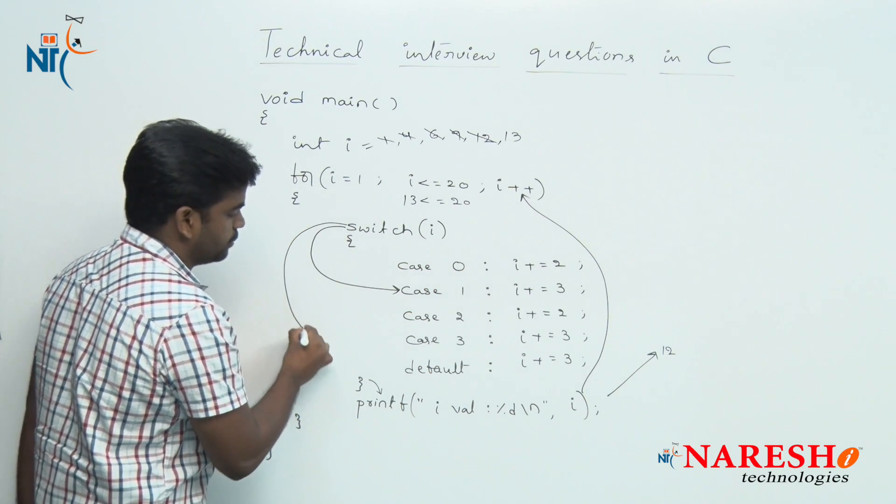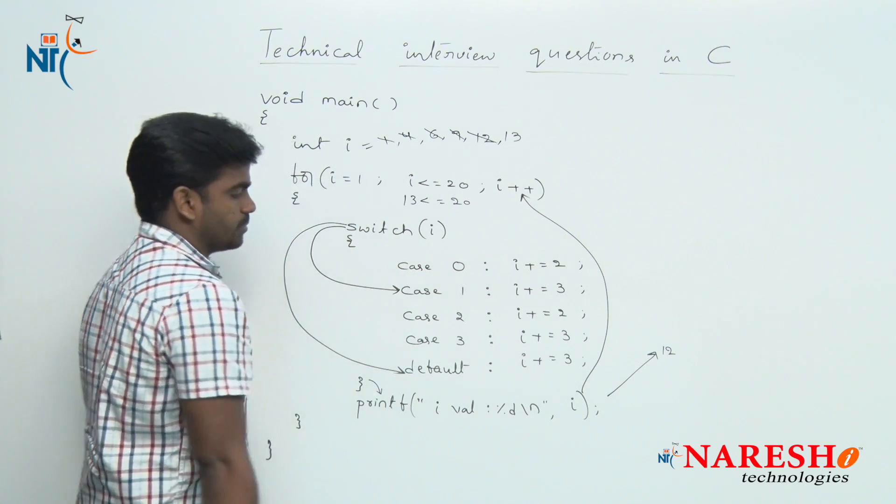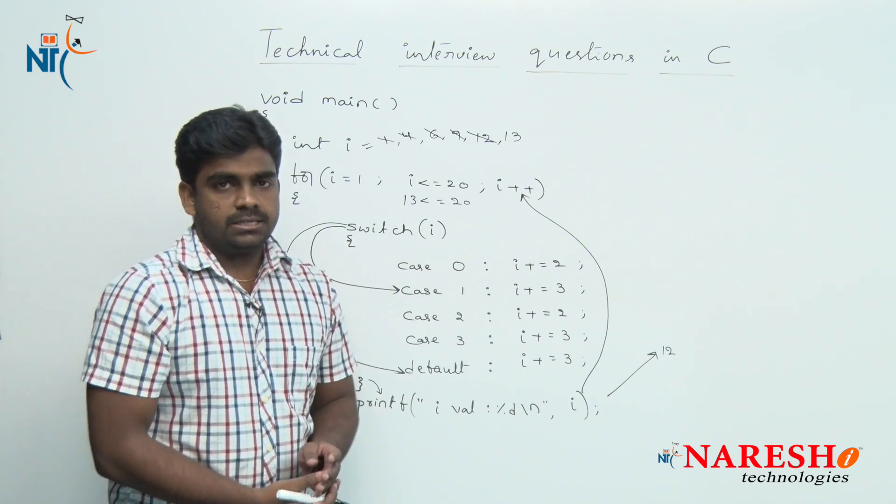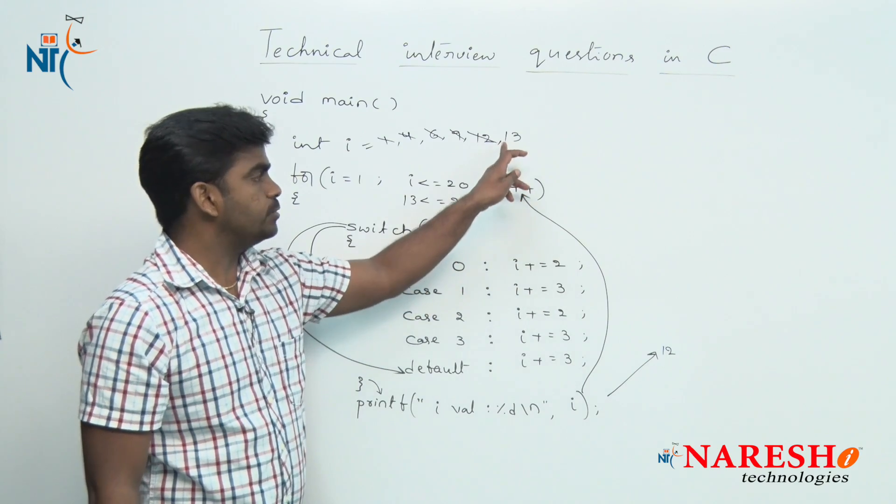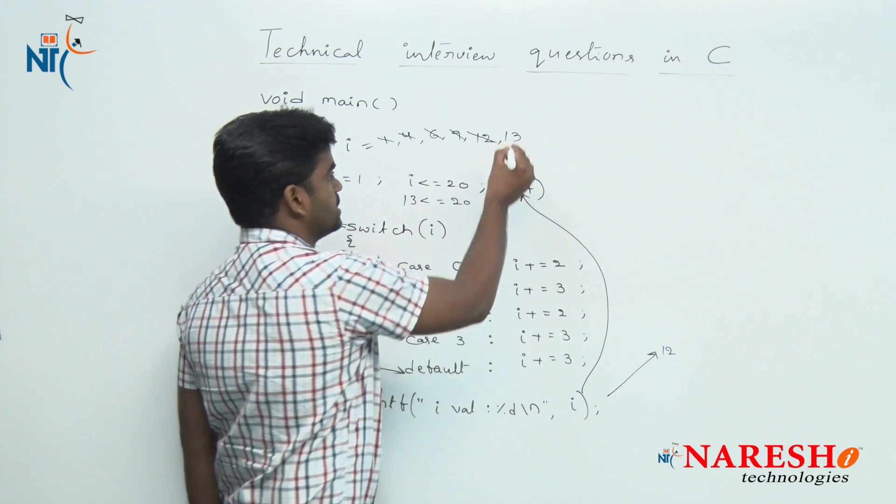Directly the control switches to default case. If there is no such case, directly default case executes. Here it is i equals i plus 3. i value is 13, 13 plus 3, the value is 16.